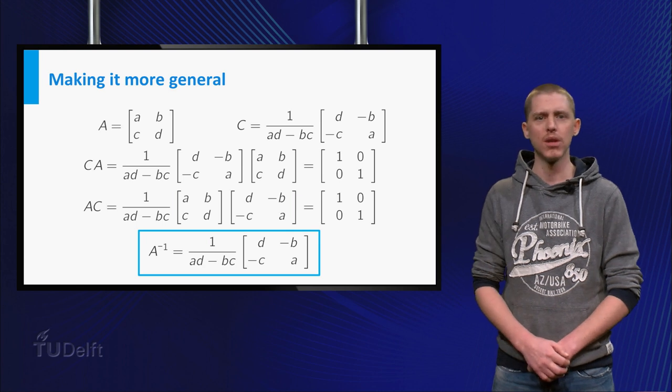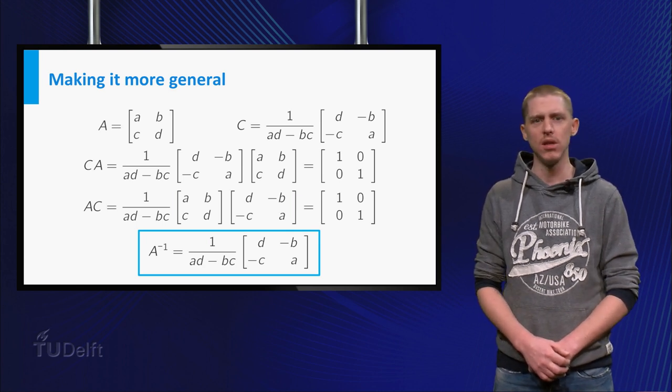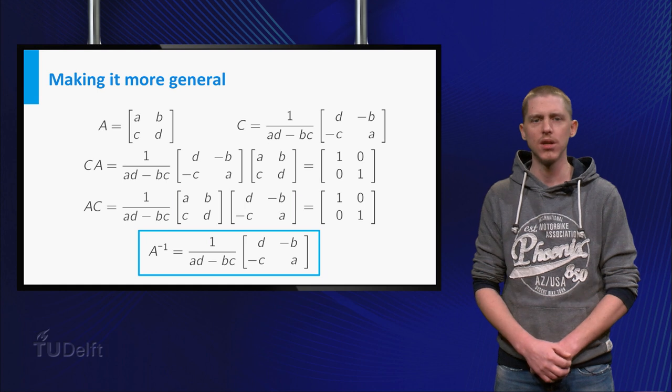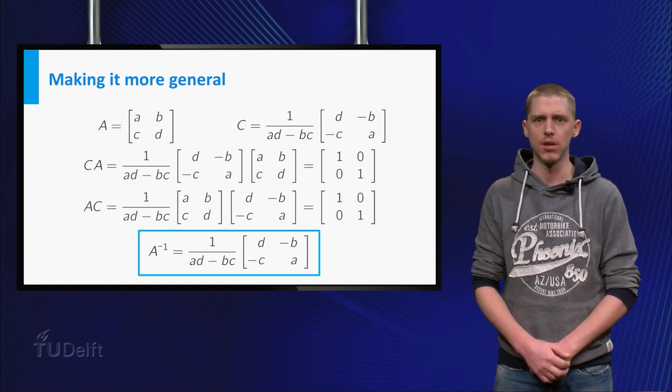You should, however, remember that we made the assumption that a times d minus b times c is non-zero because you divide by this number.